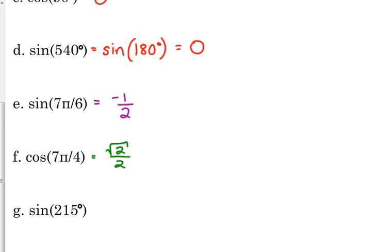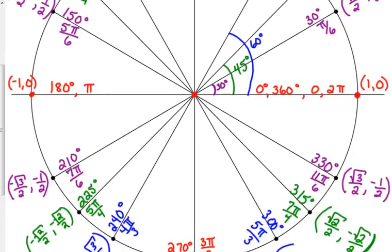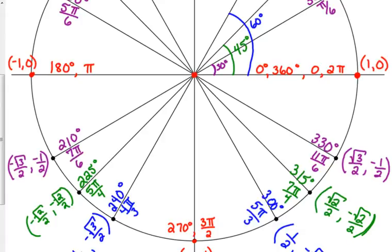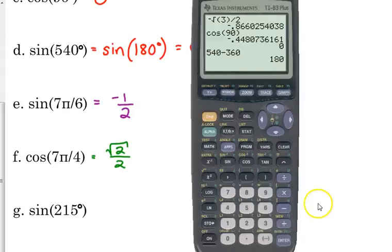And finally, 215 degrees. That is in the—oh, 215 degrees is not on our unit circle. So, if they asked you for something like that, that's not on your unit circle, then you just have to type it into your calculator.